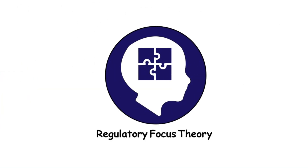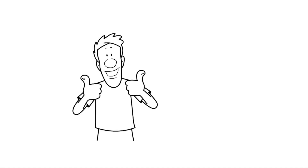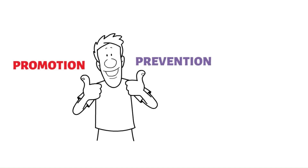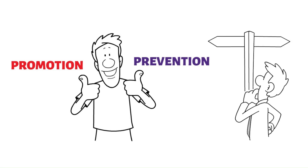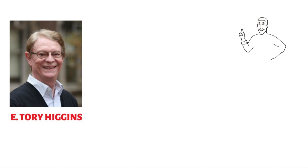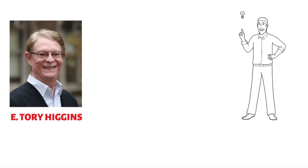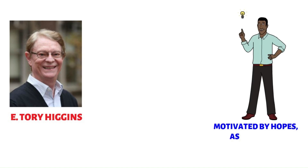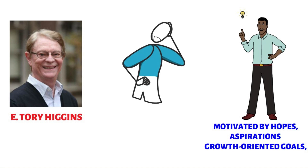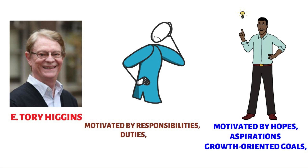Regulatory Focus Theory posits that individuals have two motivational systems — promotion and prevention — that guide goal pursuit and decision-making. E. Tory Higgins proposed that promotion-focused individuals are motivated by hopes, aspirations, and growth-oriented goals, while prevention-focused individuals are motivated by responsibilities, duties, and avoiding negative outcomes.